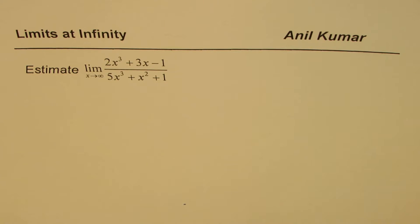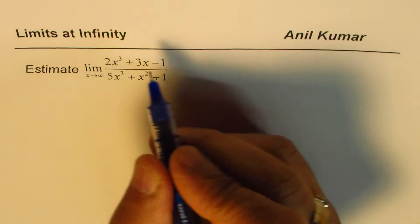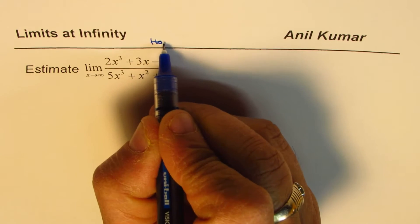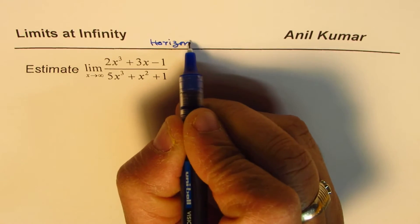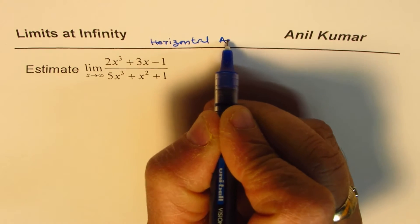I'm Anil Kumar. I have taken a few questions to find limits at infinity. The idea here is to find horizontal asymptotes, so they serve two purposes. We need to find horizontal asymptotes.